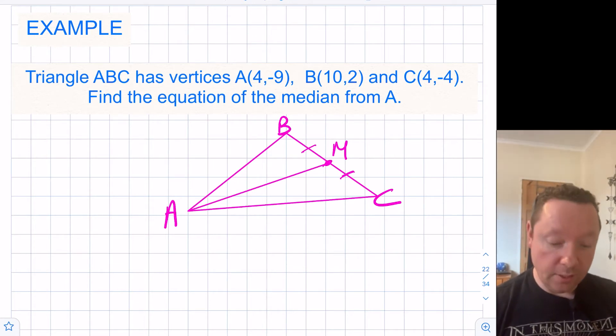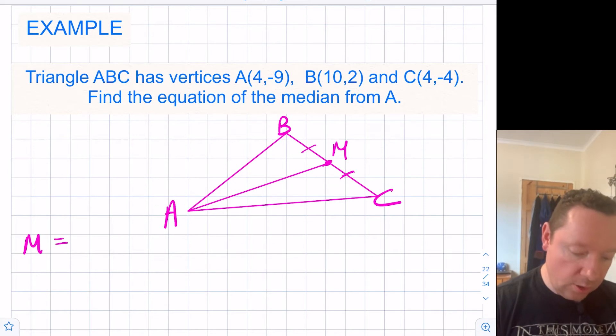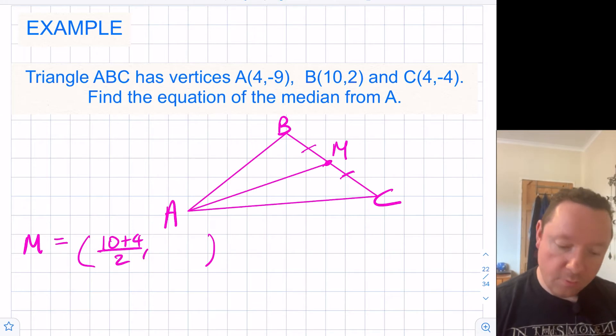So the first thing we need to do is find the coordinates of M using the midpoint formula. So we've got B is (10, 2) and C is (4, -4), so 10 plus 4 divided by 2. Then for the y parts we've got 2 and for C we've got minus 4 divided by 2 as well.